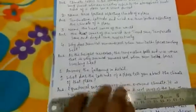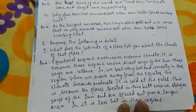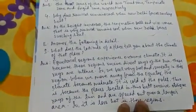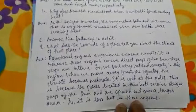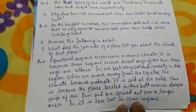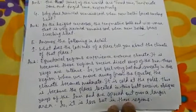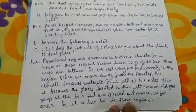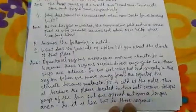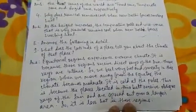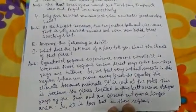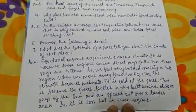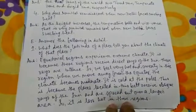Let's see question E: Answer the following in detail. Question 1: What does the latitude of a place tell you about the climate of that place? Equatorial regions experience extreme climate because these regions receive direct rays of the sun. These rays are intense, so we feel very hot and sweaty in this region. When we move away from the equator, the climate becomes moderate. It is cold at the poles because places in this belt receive oblique rays of the sun spread over a large area, so it is less hot.